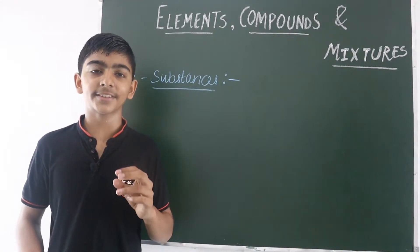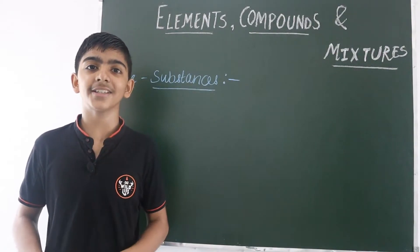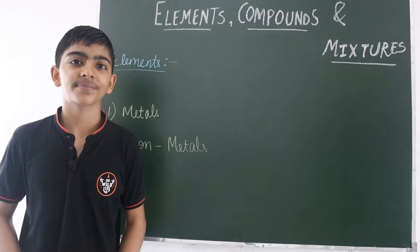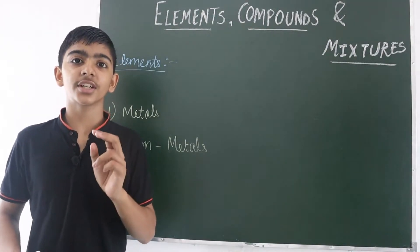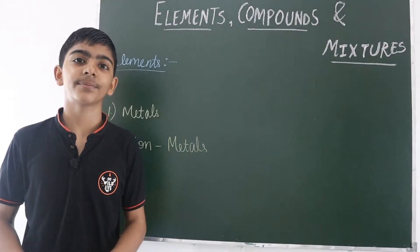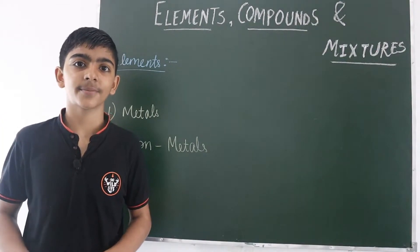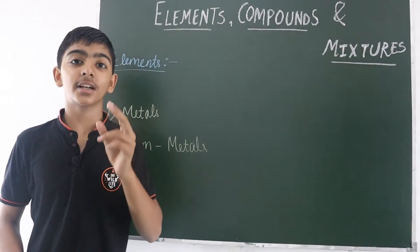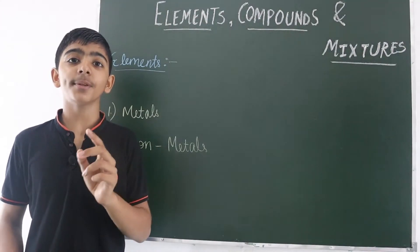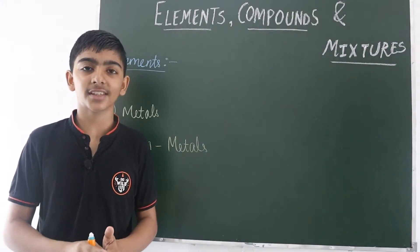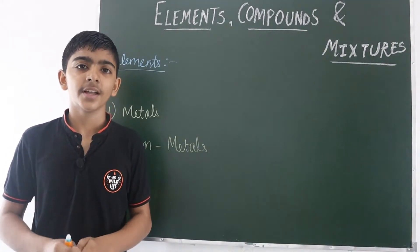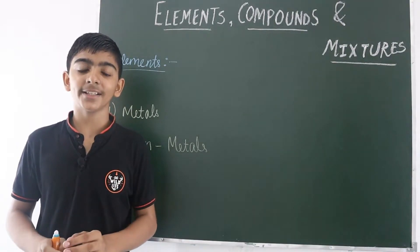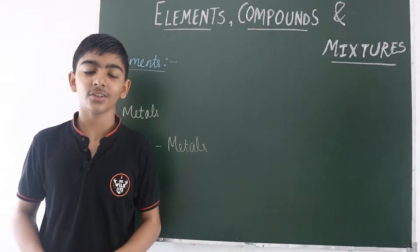Now we will discuss elements and compounds — their definitions, characteristics and examples. The first type of pure substance is the element. An element is a substance which contains only one kind of atom and cannot be broken into simpler substance by any physical or chemical means. There are four types of elements: metals, non-metals, metalloids, and noble gases (also called inert gases).